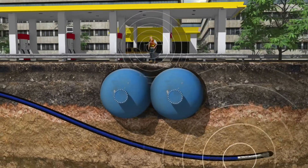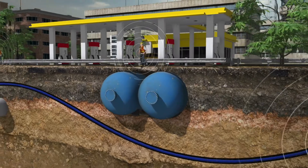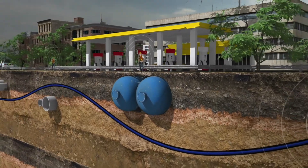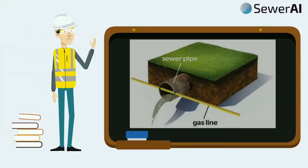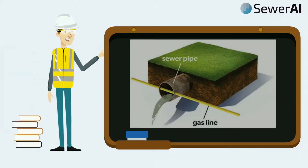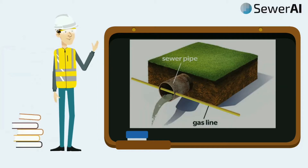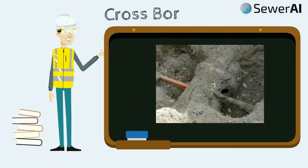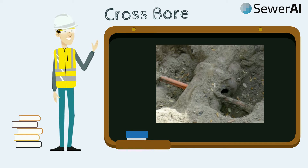Unfortunately, this method, which involves drilling and installing hundreds of feet of pipe at a time, poses the risk of accidental conflicts with and damage to existing utilities. This is known as a crossbore.